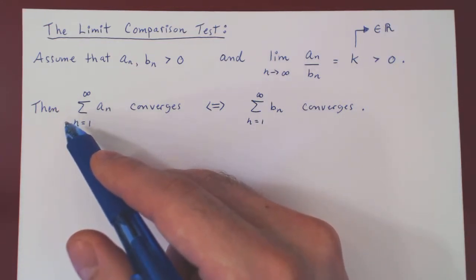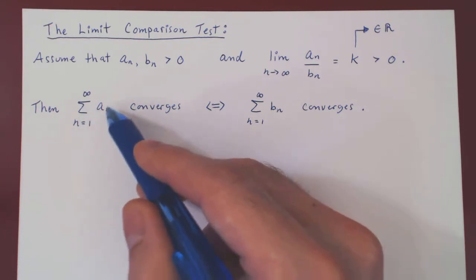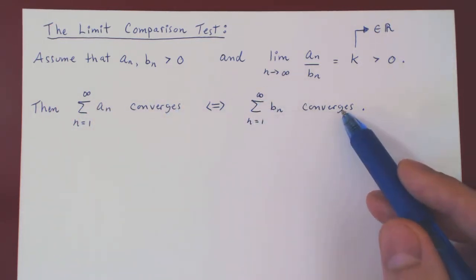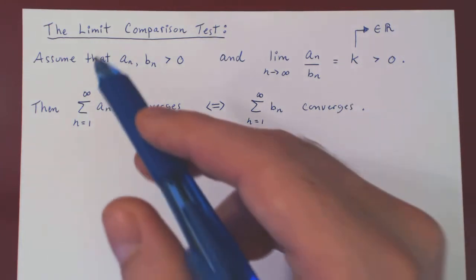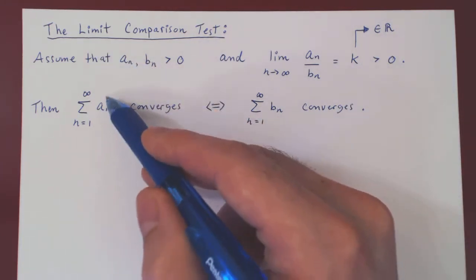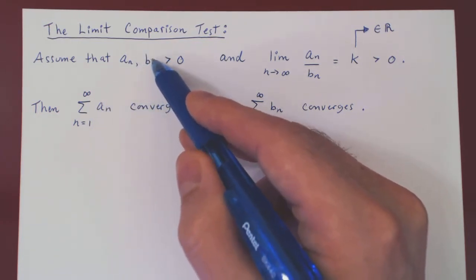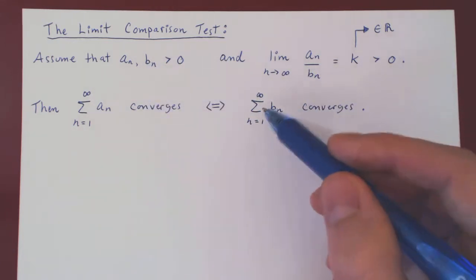Then, just a beautiful conclusion. The series of an converges, if and only if the series of bn converges. So the idea is, you will usually be given the series of an. These will be rather complicated terms. You can simplify them enough to get a much simpler sequence, where the new series will be much easier to handle. Usually it will either be a p-series or a geometric series.